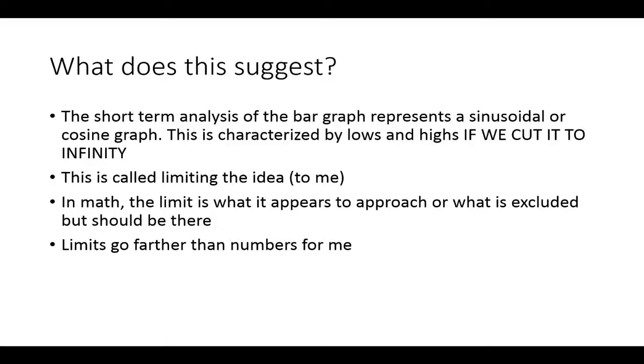What does this suggest? I guess I already went into this, but I mean I could make a video that goes more in depth on it. The short-term analysis of the bar graph represents a sinusoidal or cosine graph, but I can't continue past where I'm at now. I can't just graph out the graph because it hasn't happened yet.